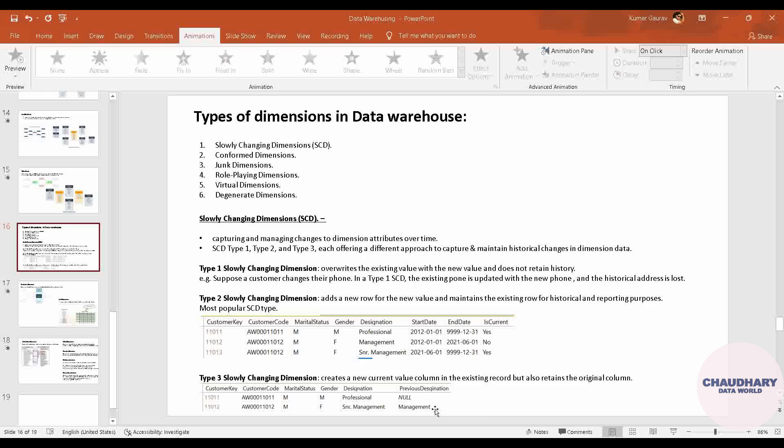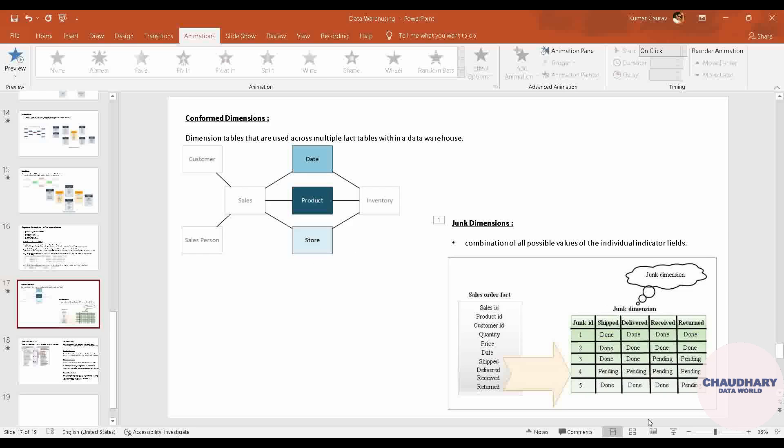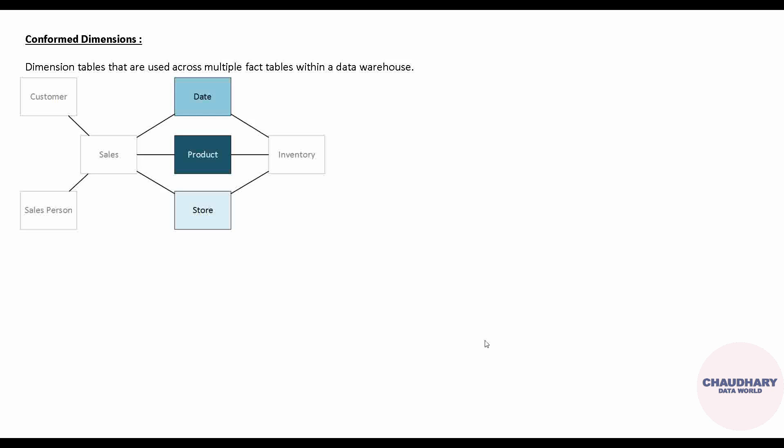That was a whole overview of SCD or slowly changing dimension. Moving ahead with the other dimensions. The first one in our list is the conformed dimension. A conformed dimension is a dimension table that is used across multiple fact tables within a data warehouse. Until now, we saw that a particular fact table is associated with multiple dimension tables, and that dimension table is likely shared with only one fact table. But when a dimension table is shared with multiple fact tables, it becomes a conformed dimension.